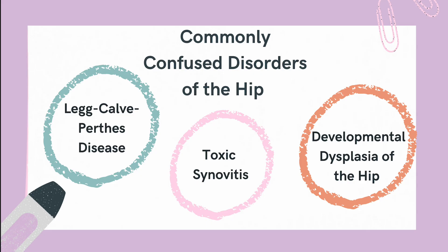Toxic synovitis is a self-limiting inflammation of the synovial membrane, often following a viral illness. It presents with sudden hip pain, a limp, and occasionally a low-grade fever. Treatment involves rest and analgesics.